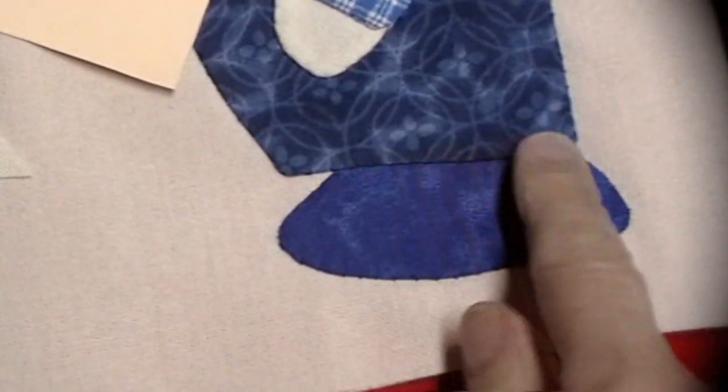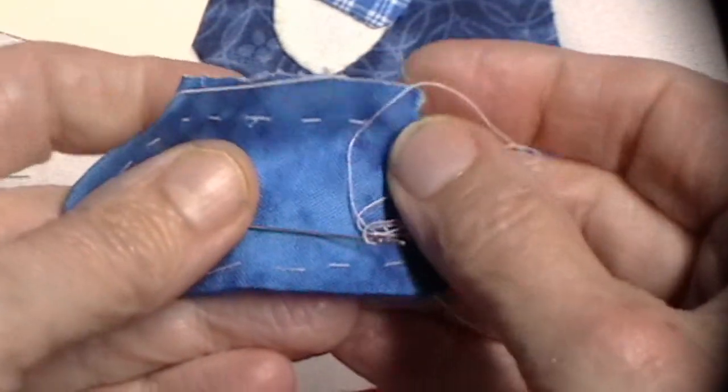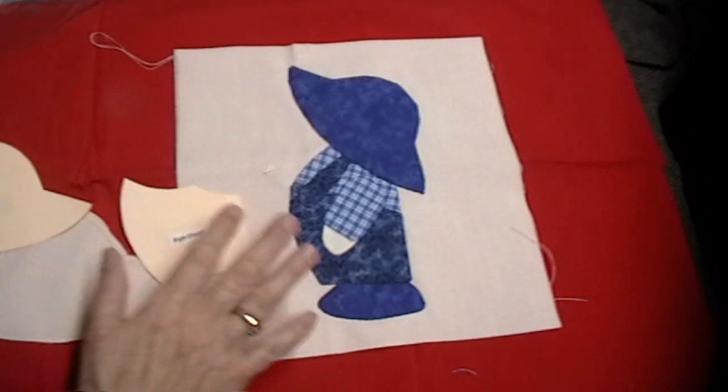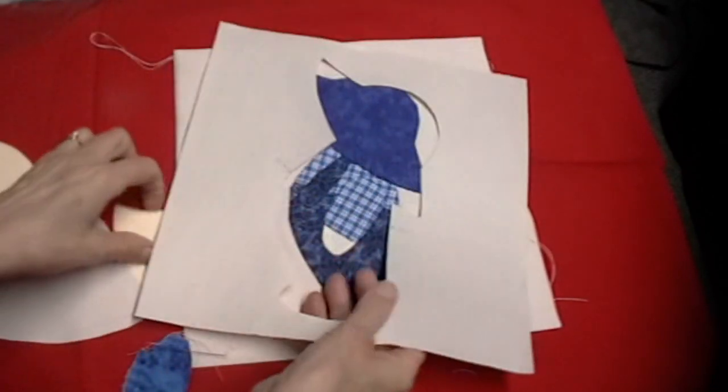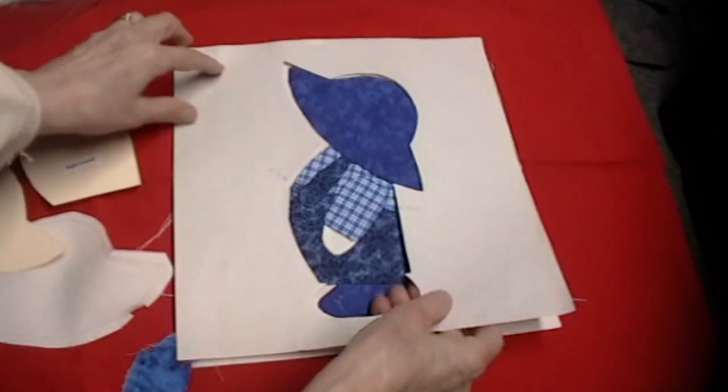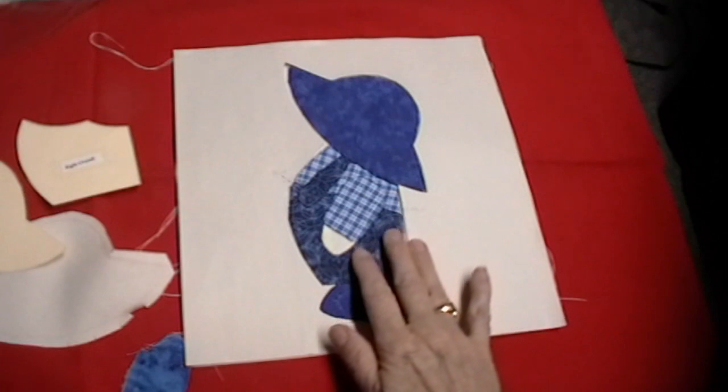There's her quarter inch turned under. And of course, where you're covered, like these shoes are covered with the pants, she would leave that un-basted. That didn't need to be basted. If you do that, once again, you can use your guide. Mother didn't have a guide. She used to just draw the outline on the block. And you would put your pieces down, again, in the same order.